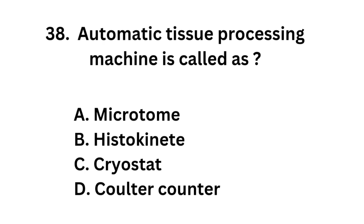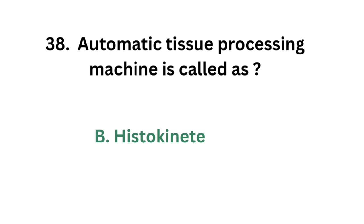Question number 38: Automatic tissue processing machine is called as. Option A: Microtome. Option B: Histokinette. Option C: Cryostat. Option D: Counter. The correct answer is option B: Histokinette. Automatic tissue processing machine is called as Histokinette.